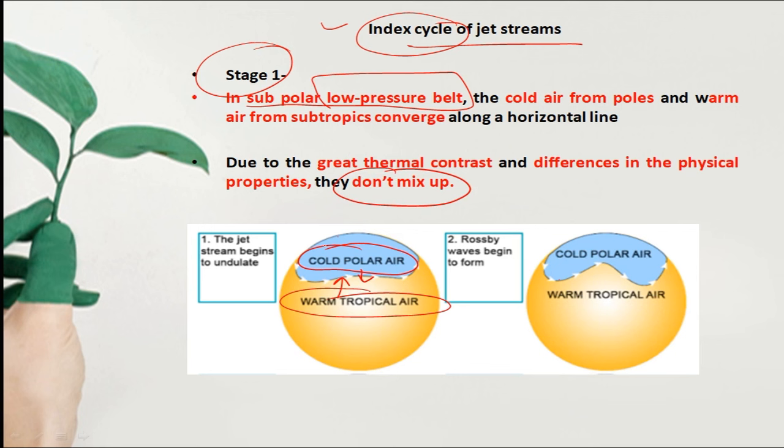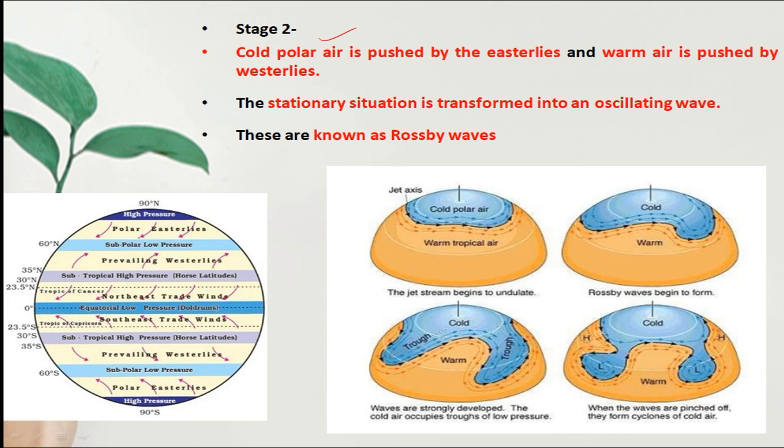Because they have different temperatures, they do not mix up. The two different air masses remain separate. The polar easterly will push the cold wind down, and the westerlies will push the warm wind north.